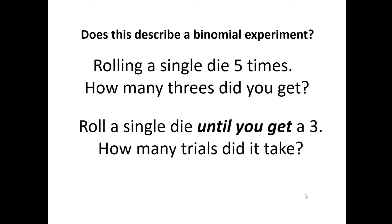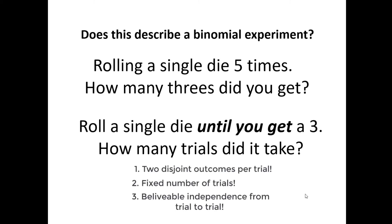Let's roll a single die until you get a three. How many trials did it take? Some of you might look at the last example and ask how this is any different. The key word is 'until you get a three' — I have not specified the number of trials. I'm actually asking how many trials it would take until you get a three. That means we fail on the fixed number of trials. It doesn't matter that there are two disjoint outcomes per roll and that dice are independent — because we failed on the fixed number of trials, this is not binomial.